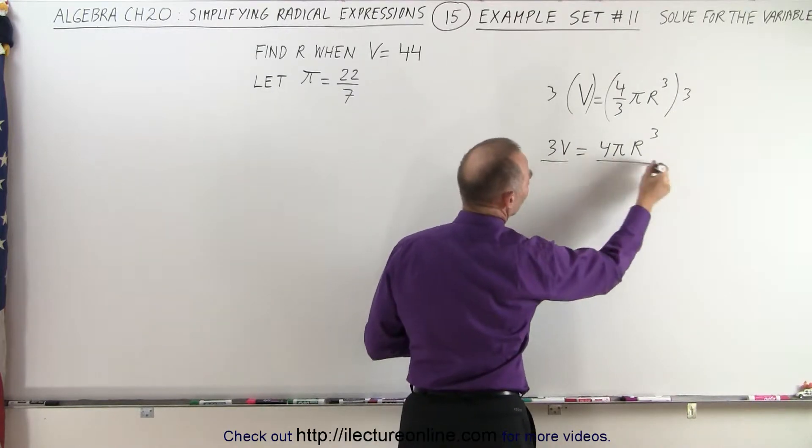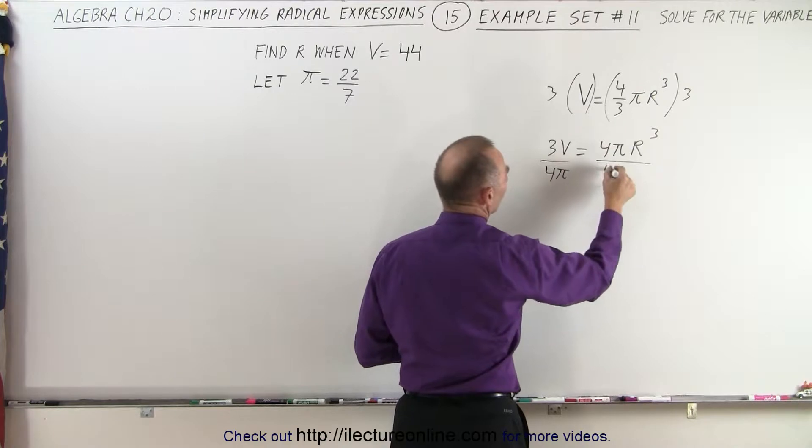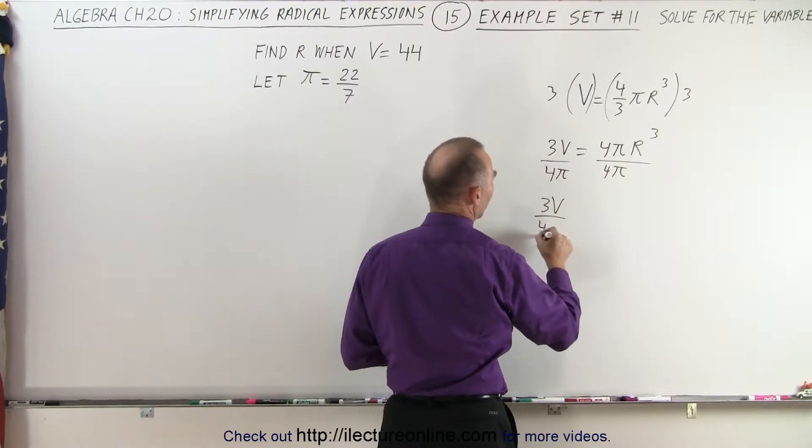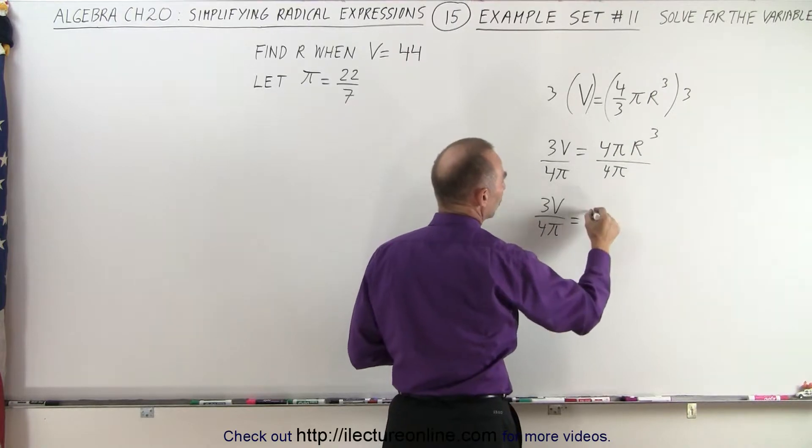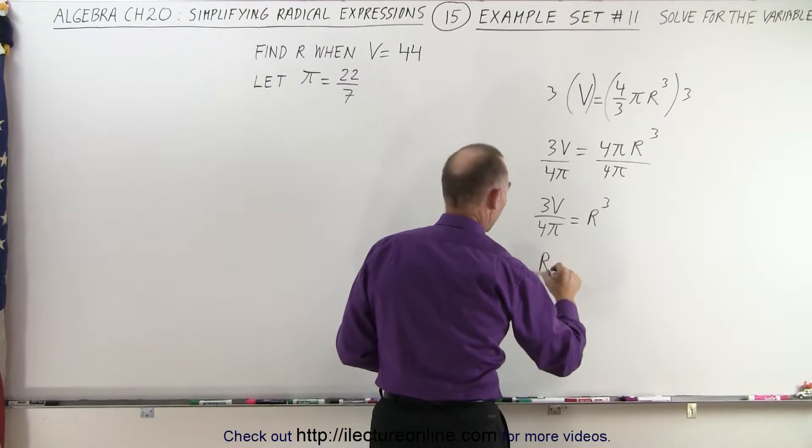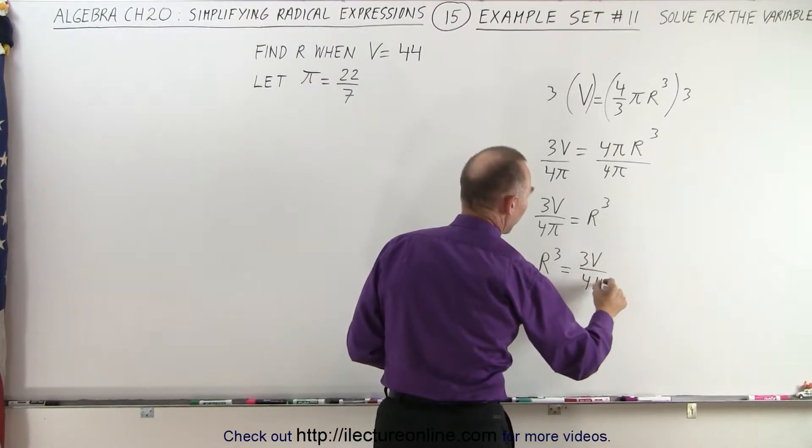Next, we're going to divide both sides by the coefficient of the r cubed, that is 4 pi. So when we do that, we get 3v divided by 4 pi is equal to r cubed. Or we can turn the equation around and write that r cubed is equal to 3v divided by 4 pi.